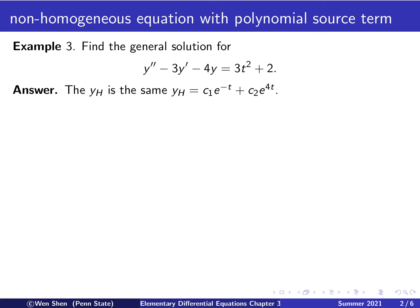The first step in finding the general solution is to solve the homogeneous equation: set the right-hand side to zero, find the roots of the characteristic equation, and form the general solution. If you do that, you will easily find the two roots are negative 1 and 4, and therefore you have a linear combination of two exponential functions. I skipped some detail because this step we are very familiar with.